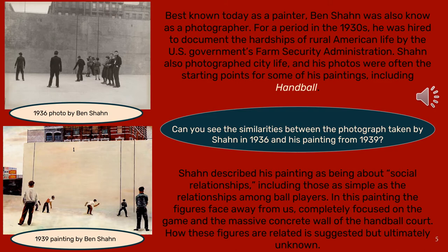Can you see the similarities between the photograph taken by Shahn in 1936 and his painting from 1939? Shahn described his painting as being about social relationships, including those as simple as the relationships among ballplayers.